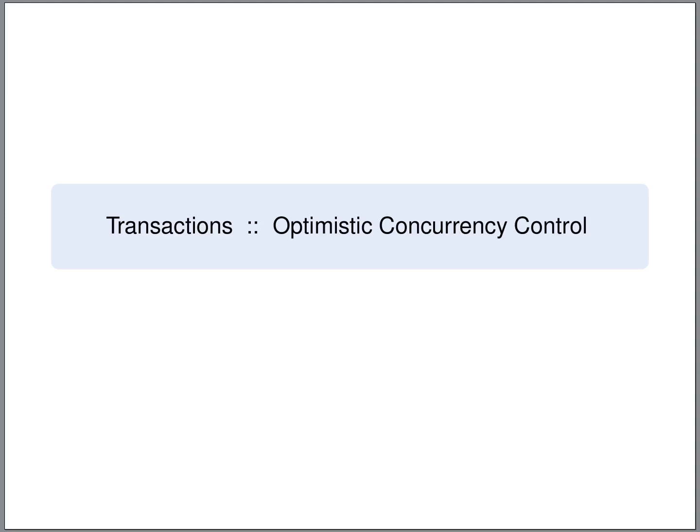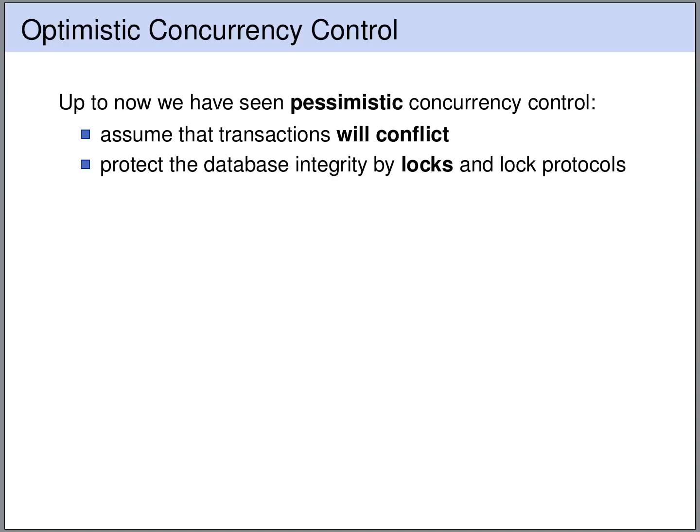Let's have a look at optimistic concurrency control. Up to now we have discussed pessimistic strategies for concurrency control. They are called pessimistic because they assume that transactions will conflict, and therefore they protect the database integrity by using locks and locking protocols.